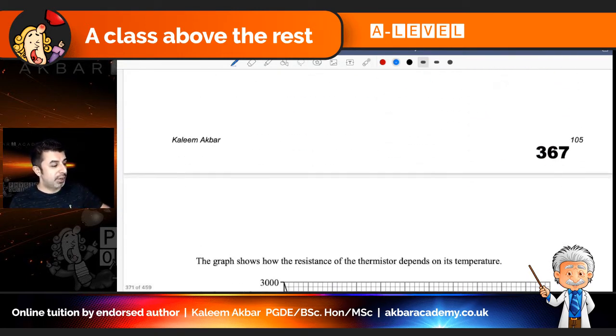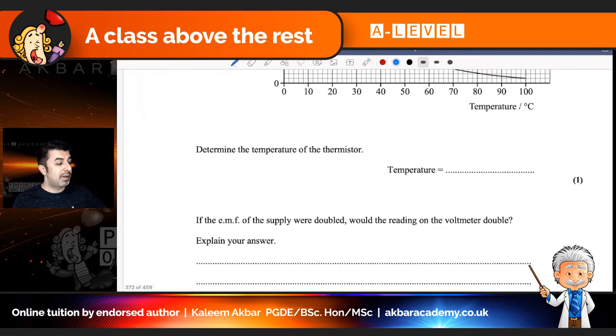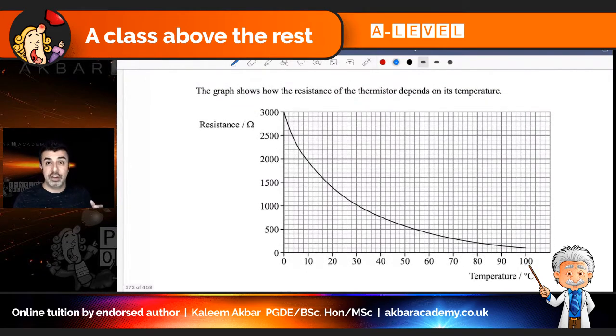Right, moving on. The graph shows how the resistance of the thermistor depends on its temperature. And then the next question says, determine the temperature of the thermistor. Well, we found that the resistance of the thermistor is 933 ohms. So we can see that the y-axis has resistance. The x-axis has temperature.